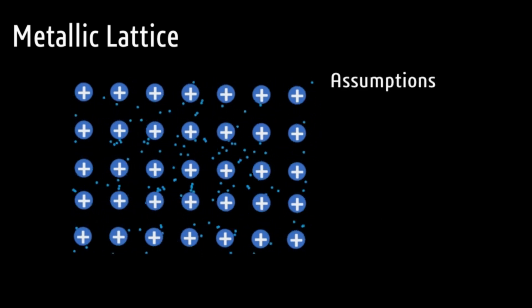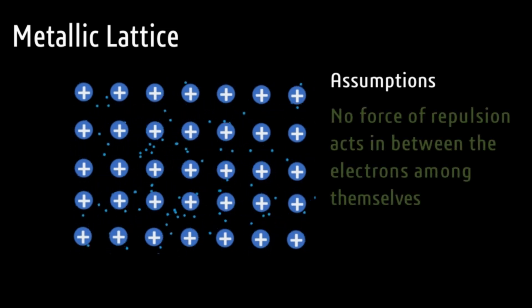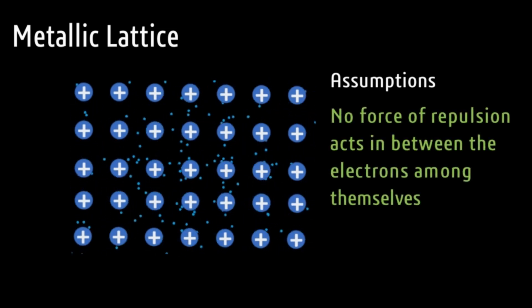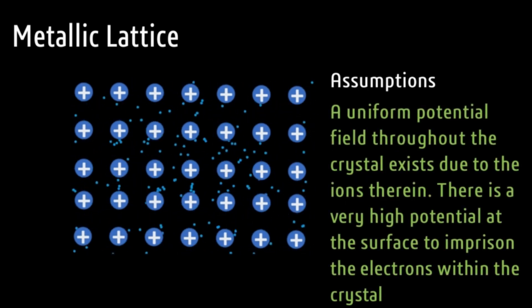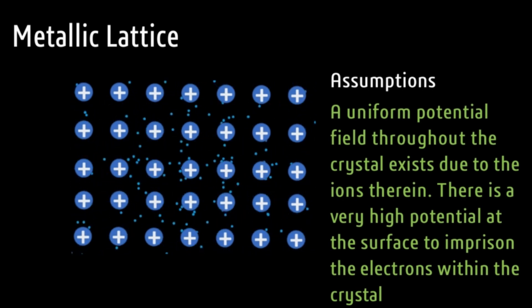Few assumptions are very important in this regard. Number 1: No force of repulsion acts in between the electrons among themselves. Number 2: A uniform potential field throughout the crystal exists due to the ions therein. There is a very high potential at the surface to imprison the electrons within the crystal.